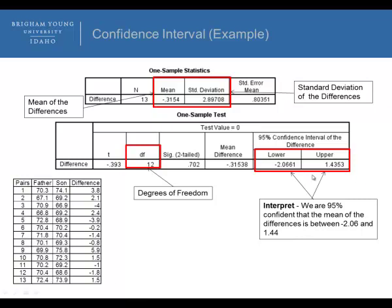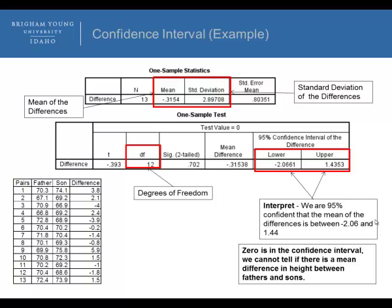Well, the answer is we can't tell, even though it looks like it's tilted towards one way. But since it is possible that we can get a negative difference on average or a positive difference, and zero is within our confidence interval, we cannot tell if there is a difference. Therefore, zero is in our confidence interval, so we cannot tell if there is a mean difference in heights between fathers and sons.